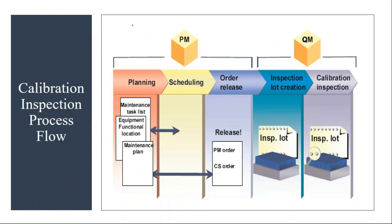From the PM side, they will do all the planning activity. They create test equipment, then they will create the maintenance plan. When they do the scheduling, the system will generate a calibration order. Along with that order, for QM, it will generate an inspection.